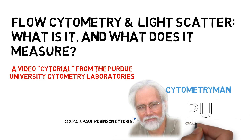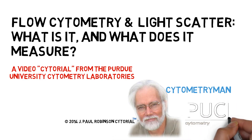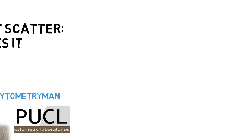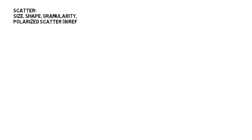We're going to discuss light scatter and what it means in flow cytometry. There are many aspects to light scatter and several terms we use are related to light scatter properties. For example, you might hear terms like size, shape, granularity, complexity, birefringence and refractive index, all of which are related to light scatter.